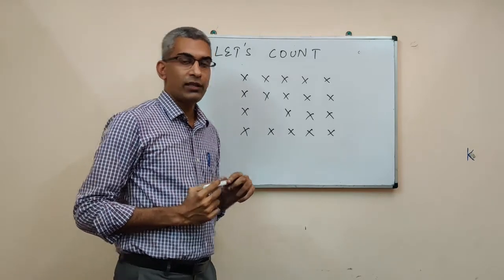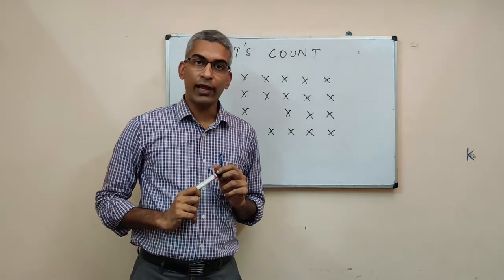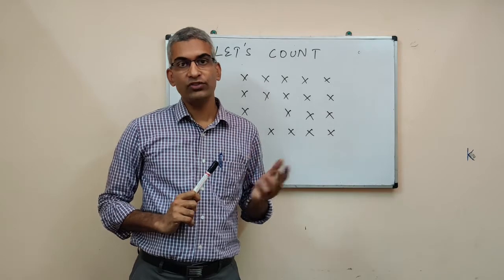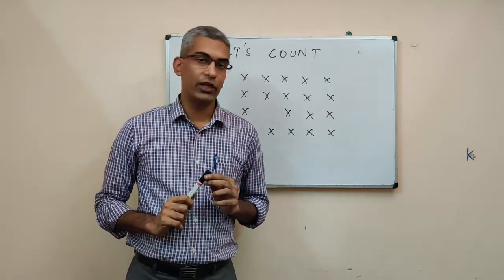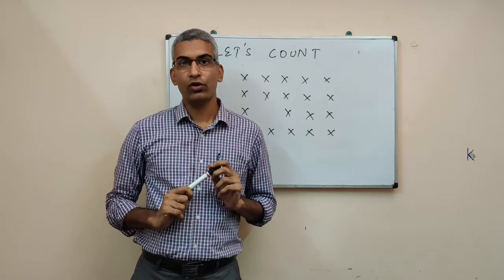Now if you look at the typical problems that come in aptitude test papers from this category, we will have typically two types of problems, one in which the order is important, which we call permutation, and another in which the order is not important, which we call combinations.